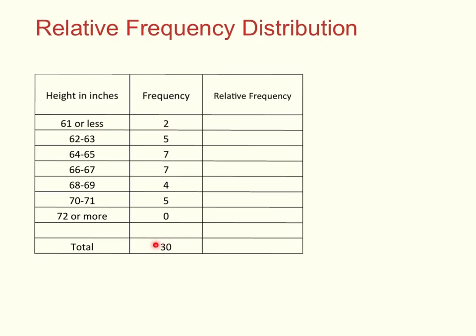Starting with the first bin, 61 or less, what proportion of the data fall within that bin? It's 2 out of 30. We calculate 2 out of 30 equals 0.07. Then the next one is 5 out of 30, so 5 observations out of 30 have a height of 62 or 63. 5 out of 30 equals 0.17. We just complete this column, calculating the proportion of data in each of the bins: 7 out of 30, 7 out of 30, 4 out of 30, 5 out of 30.